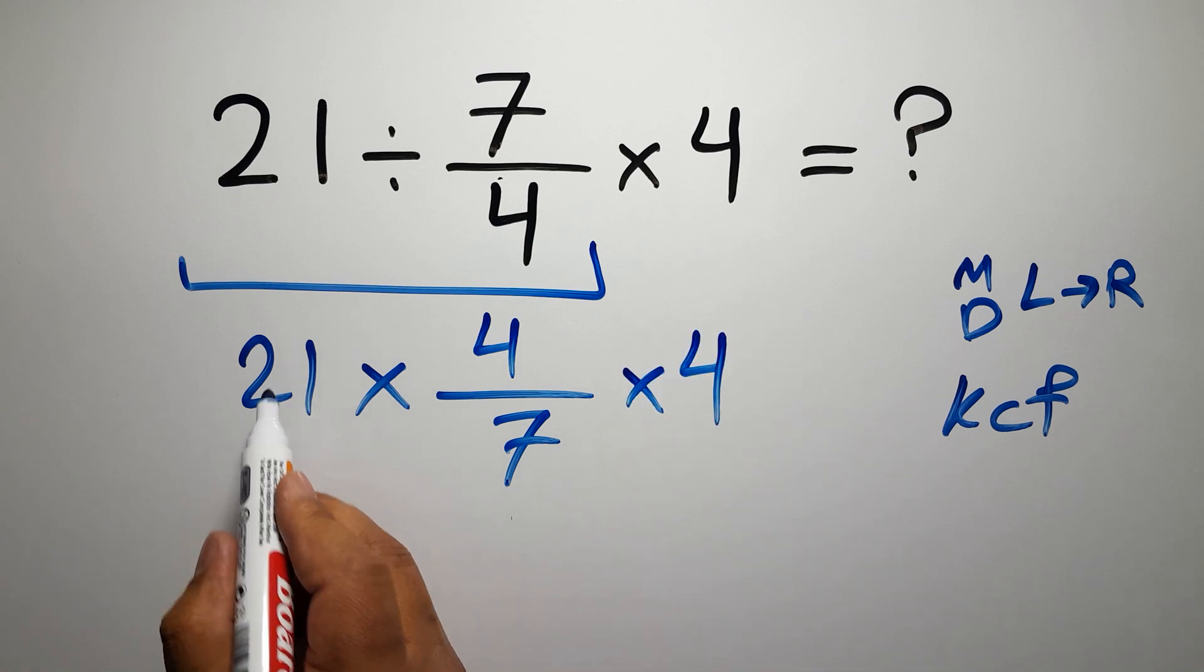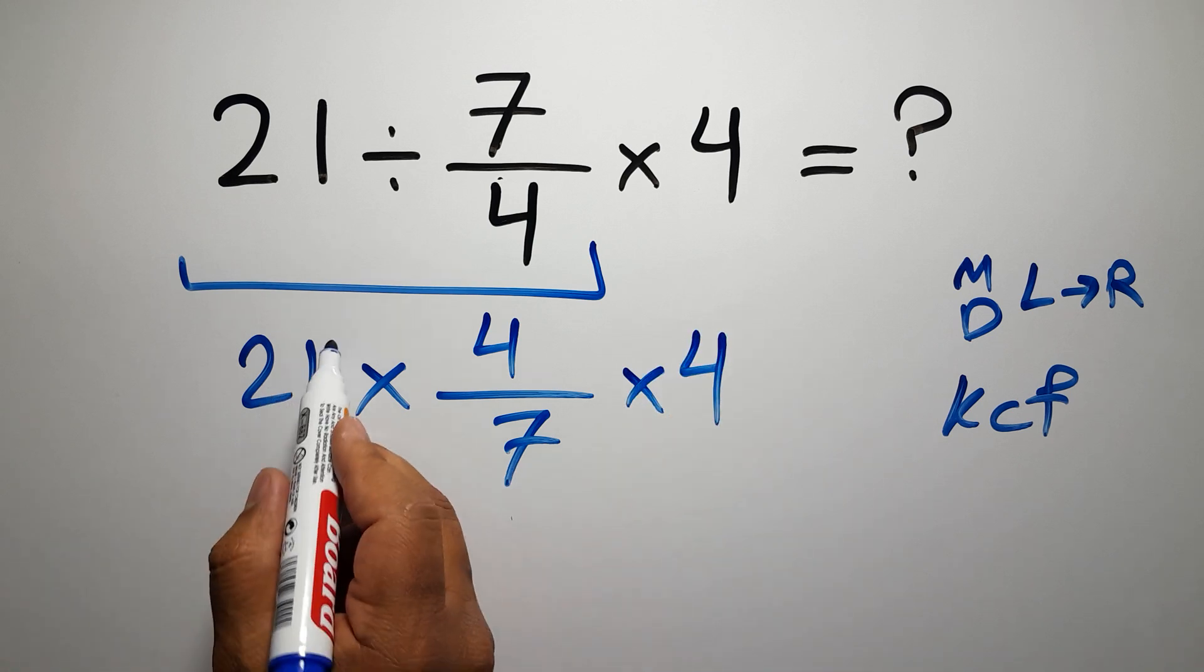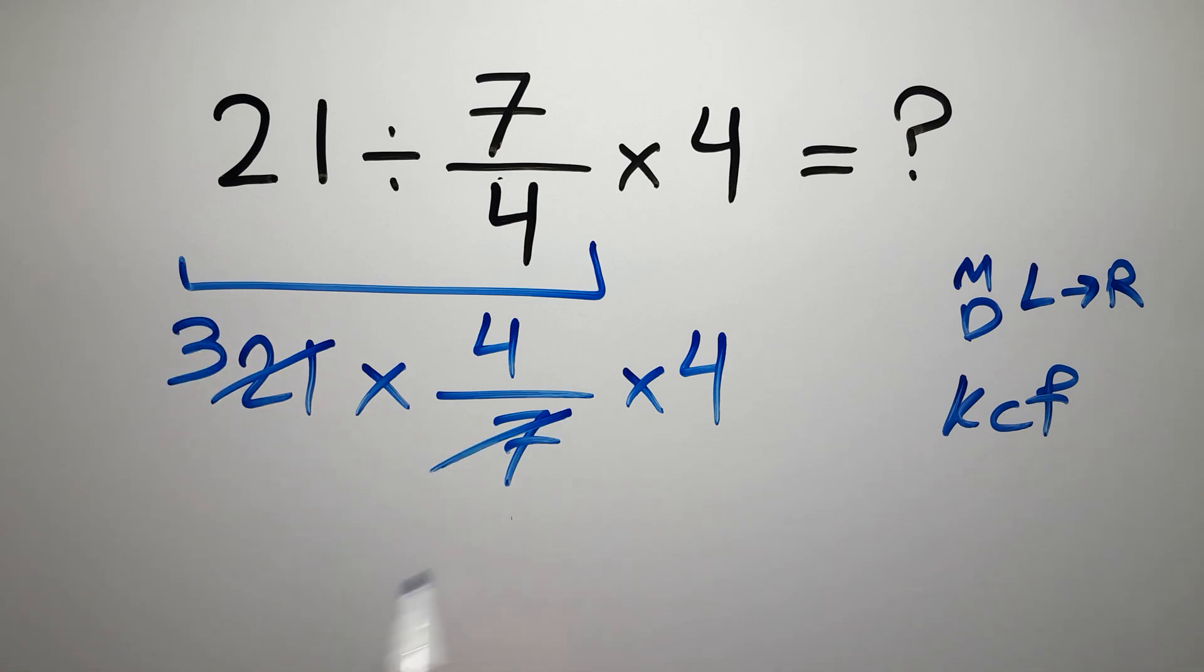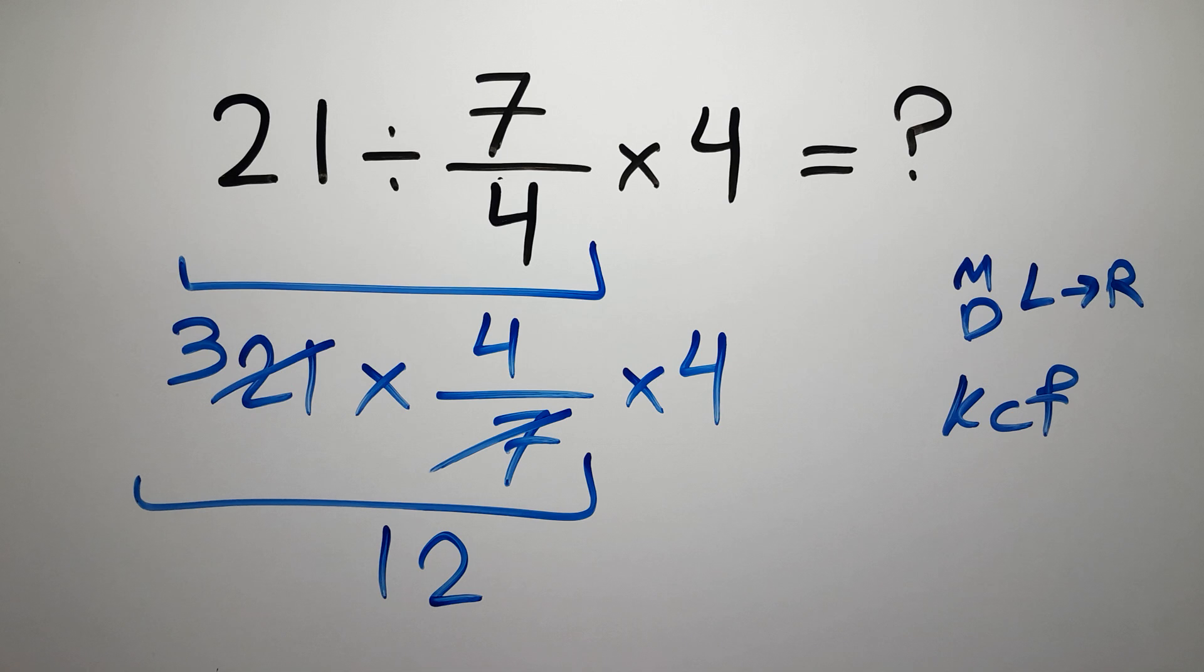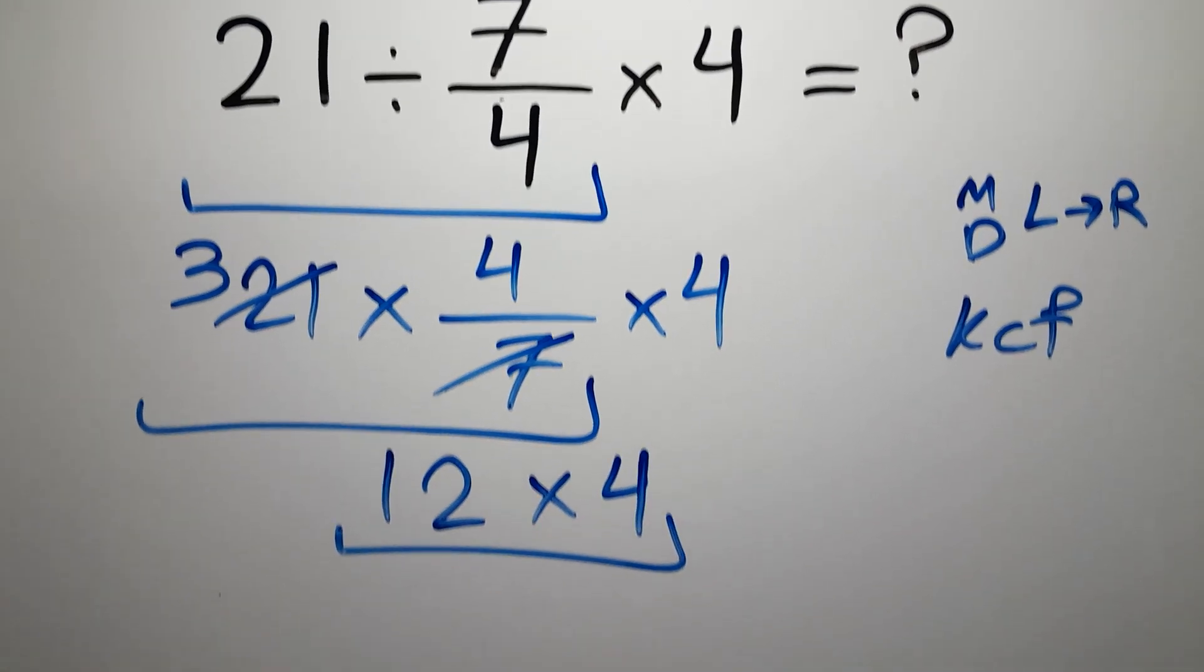Now 21 divided by 7 gives us 3. Okay, so 3 times 4 equals 12, and 12 times 4 gives us 48.